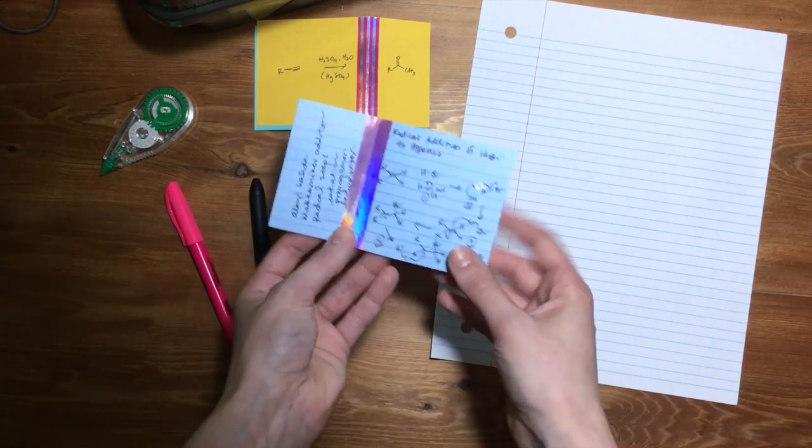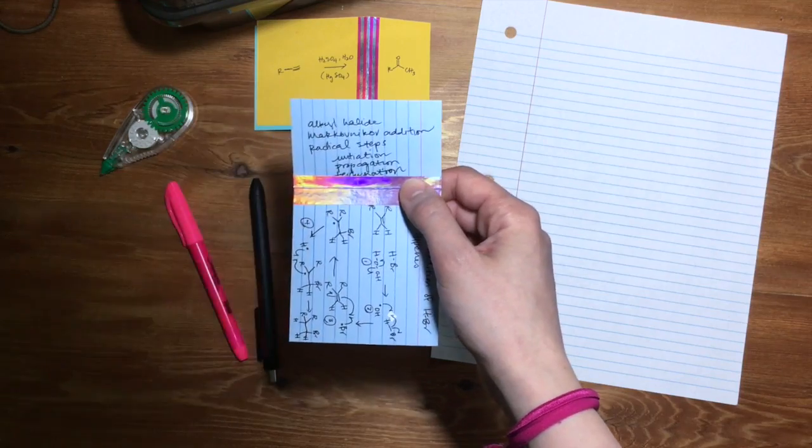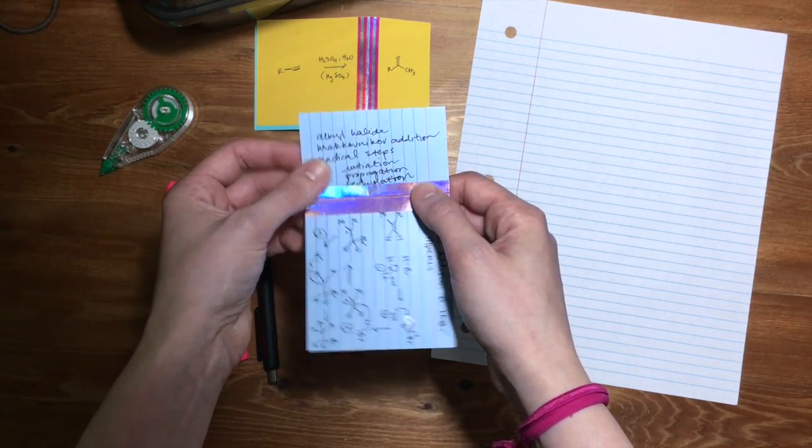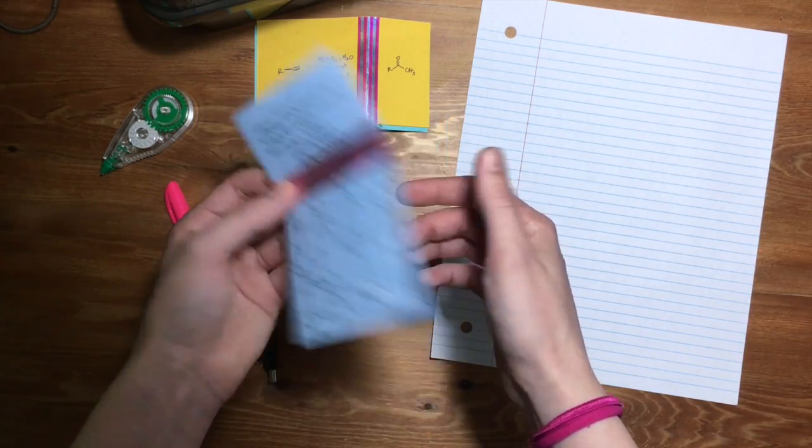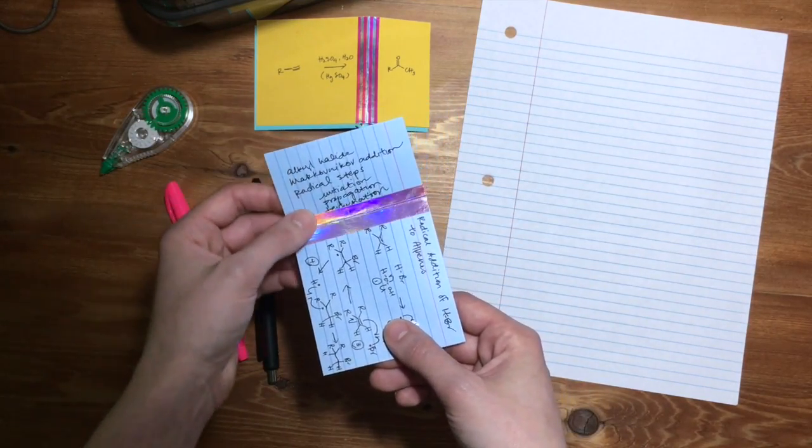So reactants, reaction conditions, and products. Then on the back, you're going to want to take that one-third section at the top, and I would recommend putting down any key vocabulary that was unique to this reaction or this was the first time that you saw this vocab. So you'll write those there, and then you can use this card as an opportunity to refresh yourself on the vocab later on.